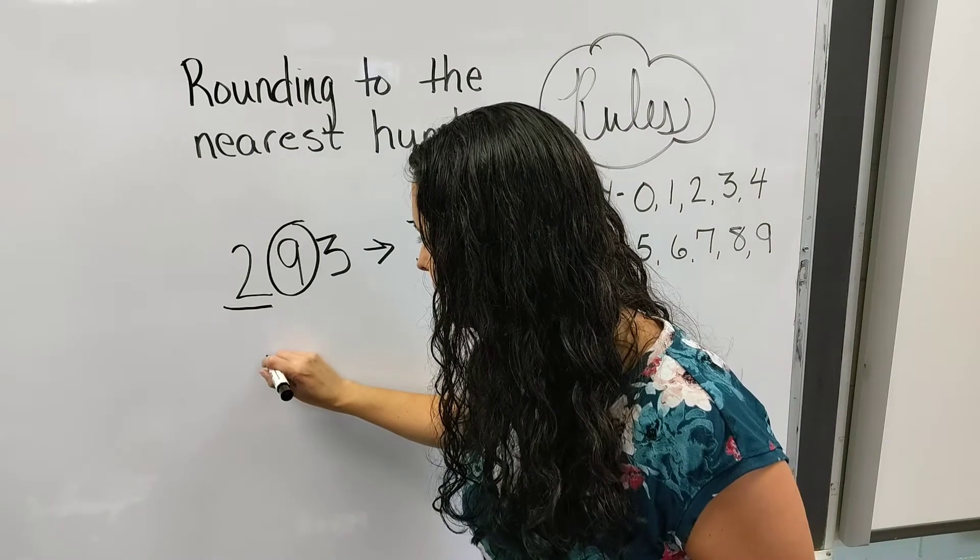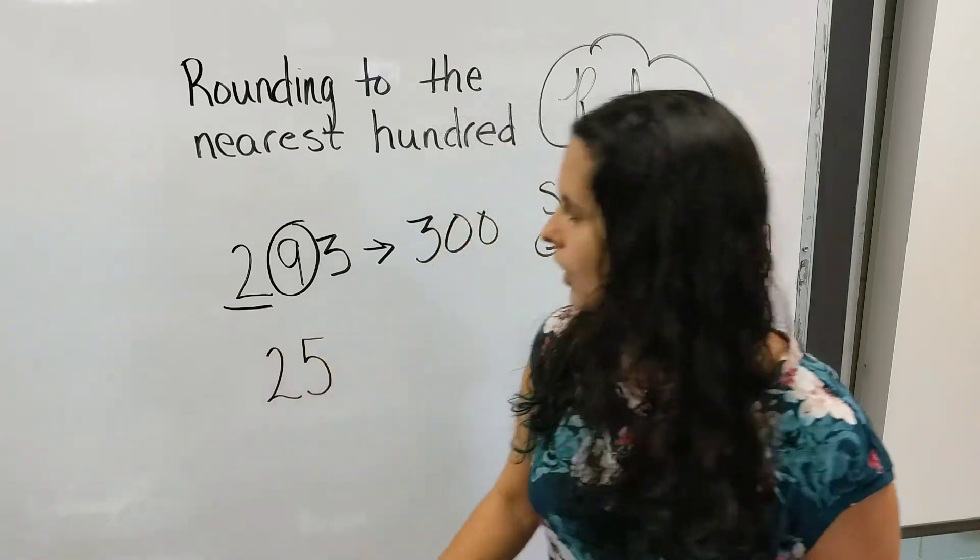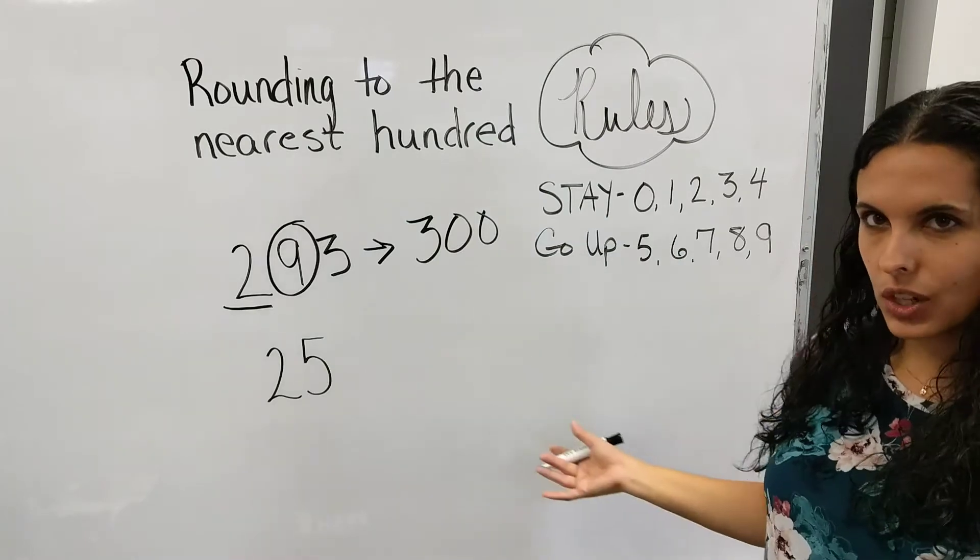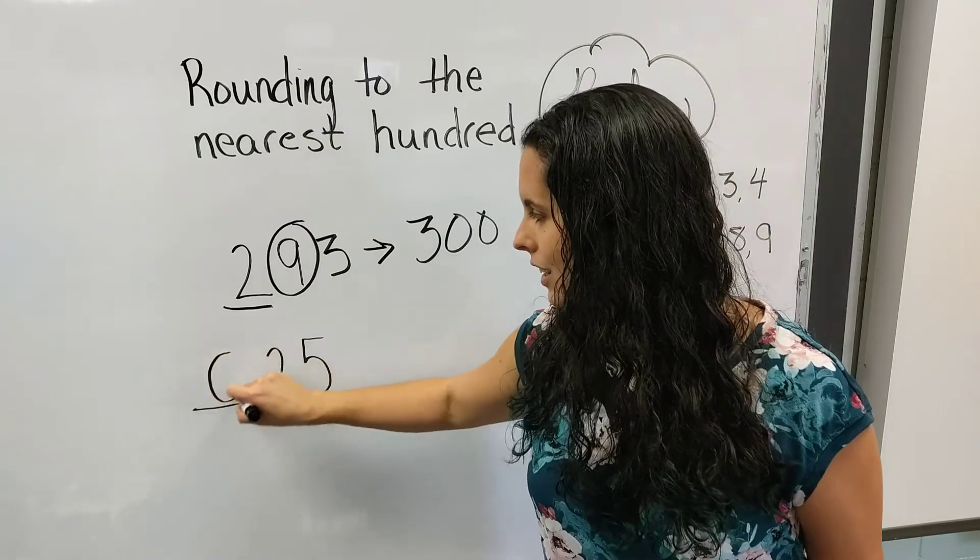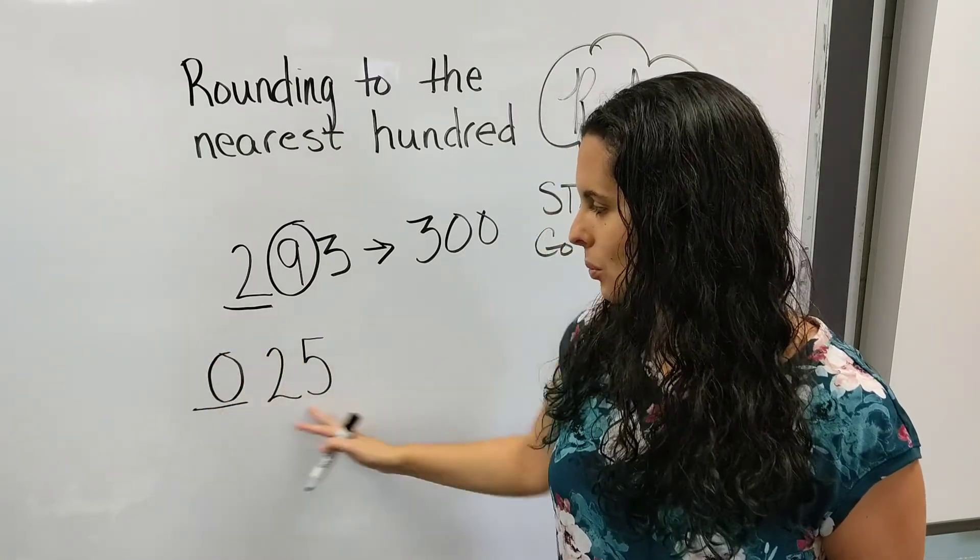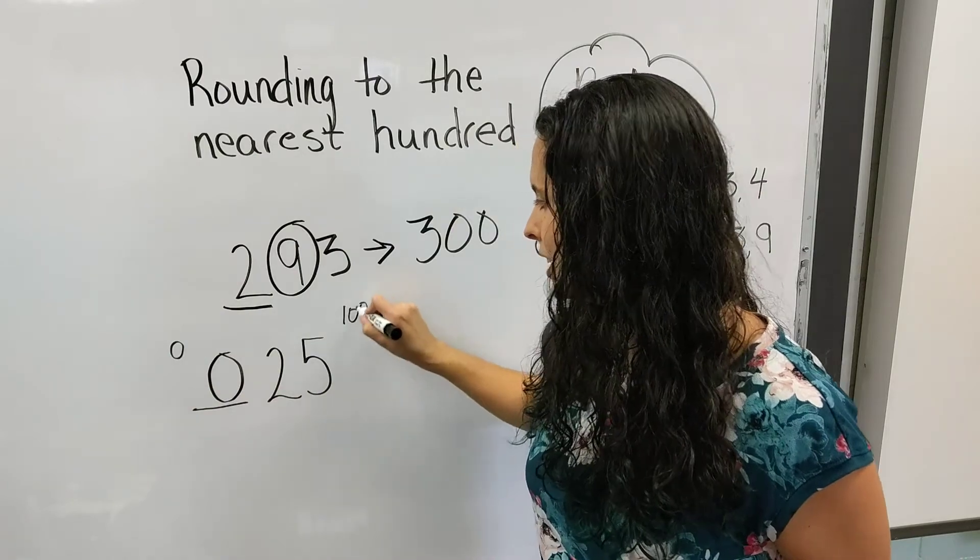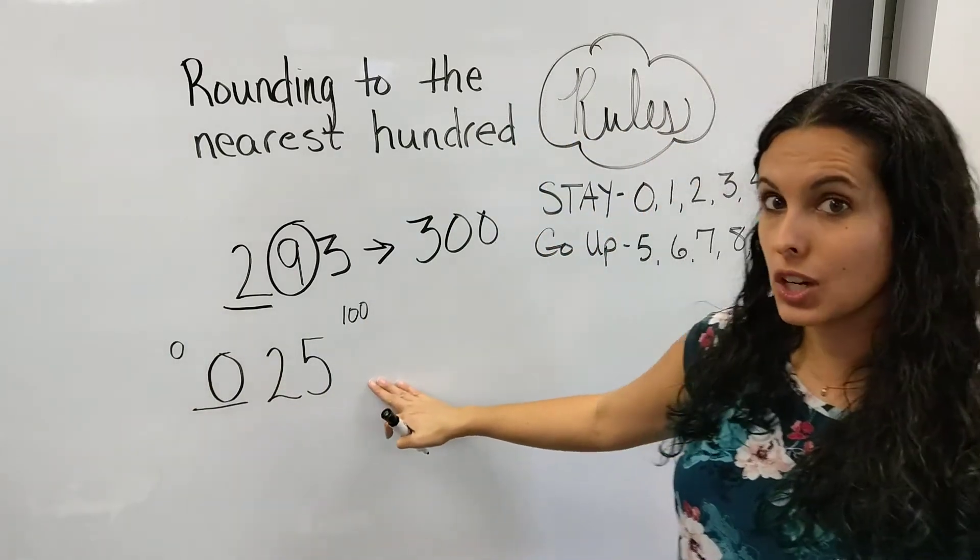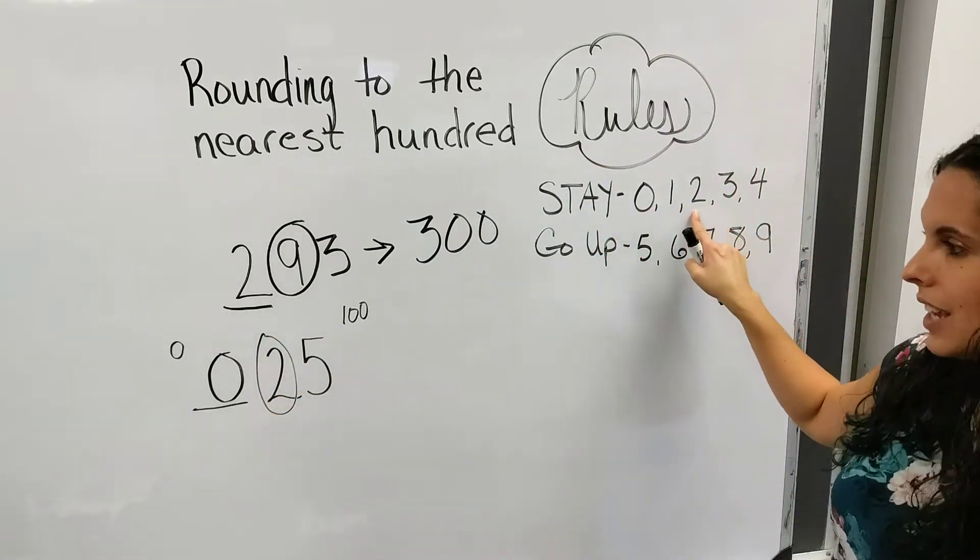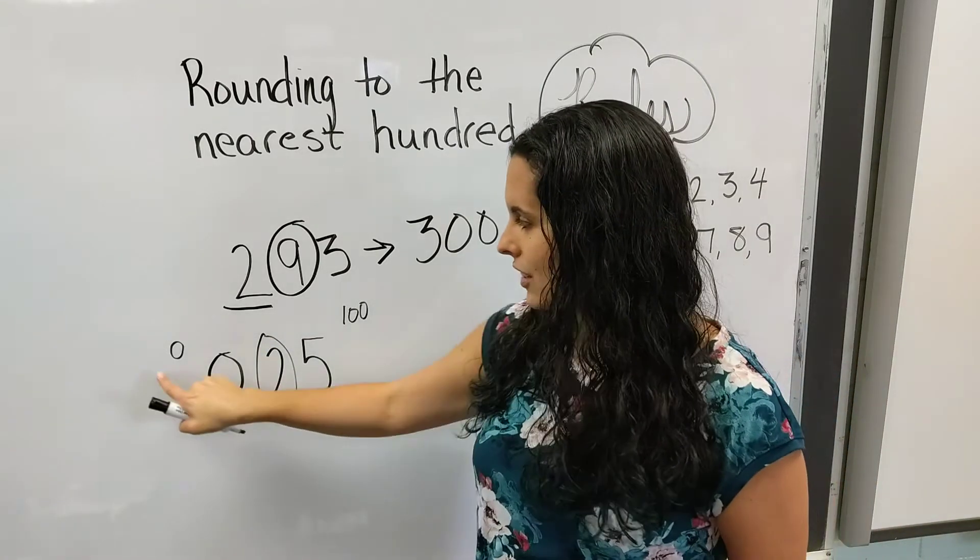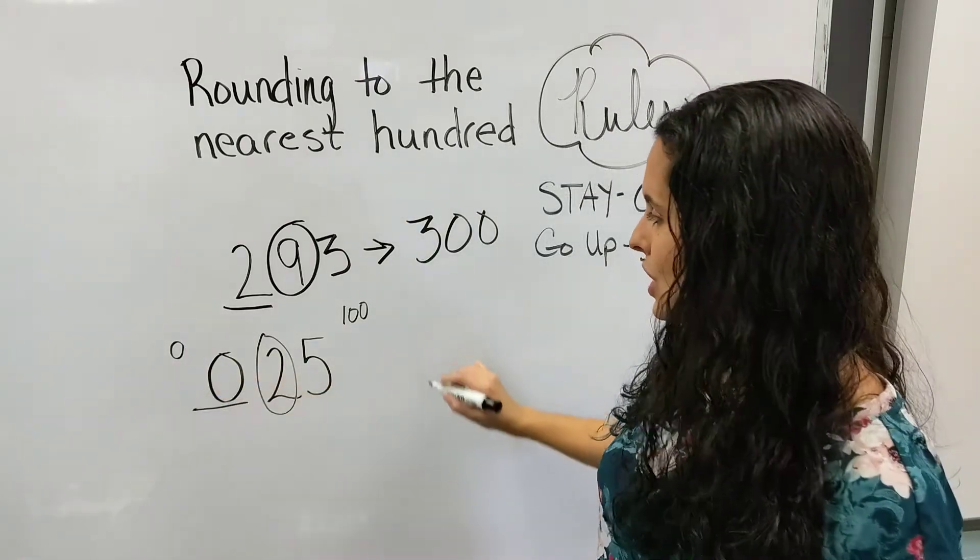All right, let's do another number. Let's do 25. If I'm rounding to the nearest hundred, I want to underline the hundred's place, and it's here. I don't have any number there. So 25 is between 0 and 100 if I'm rounding to the nearest hundred. Now, this 2 is my bossy number, and it says stay. So 25 is going to tell the zero to stay a zero, and it's going to round to zero.